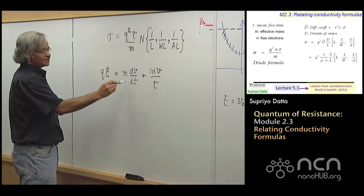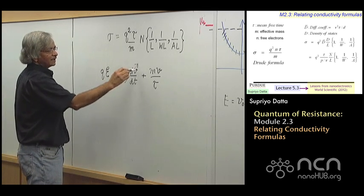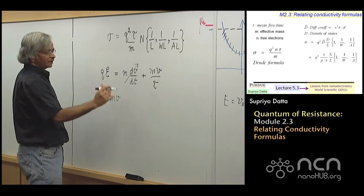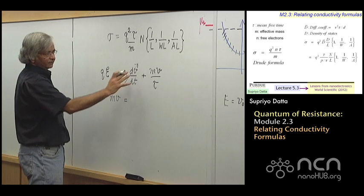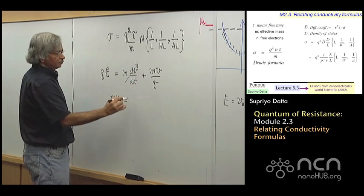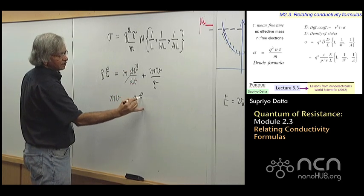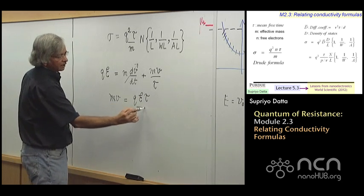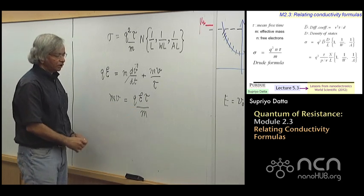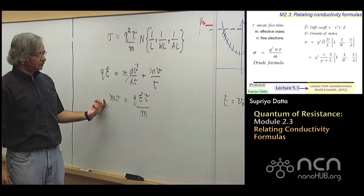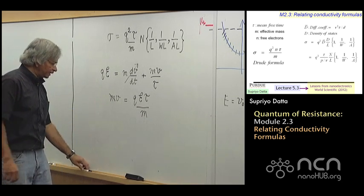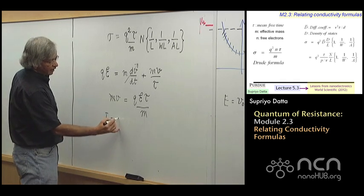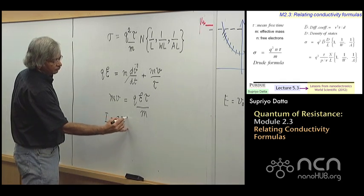This is the result that's most widely known. And since our result looks a little different, I feel it's useful to try to connect the two. And just want to remind you, if you have seen this before, how this one is obtained. So then you say that at steady state, we can drop this. And that tells you that the momentum, the steady state momentum that electrons will achieve will be given by QE tau.